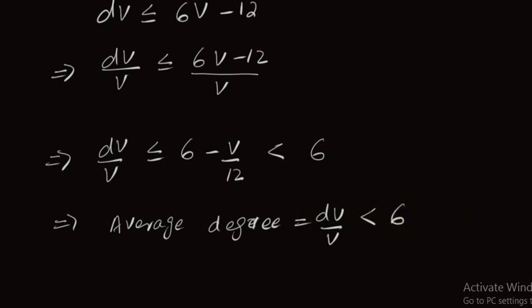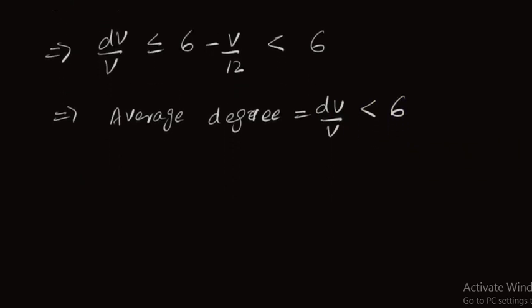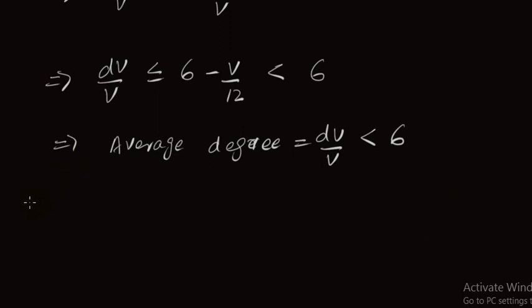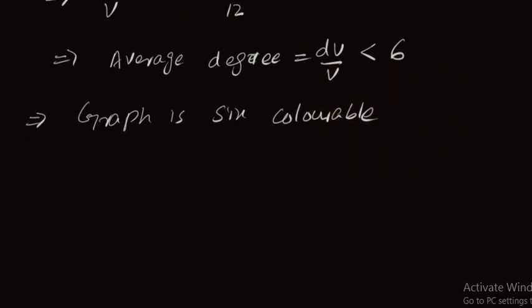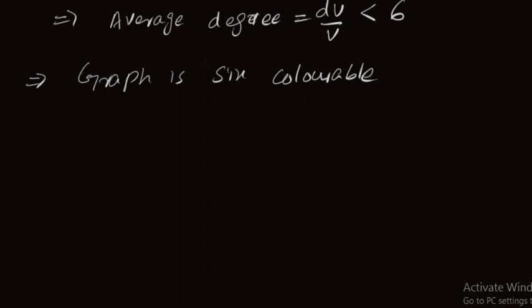So the average degree of the graph is less than 6, which implies the graph is 6-colorable.